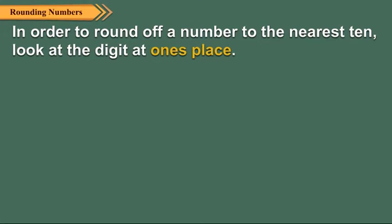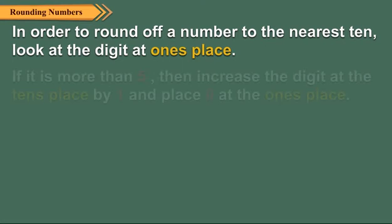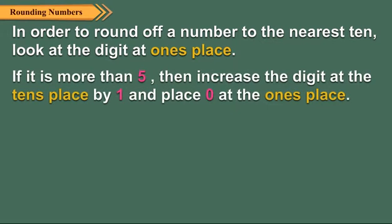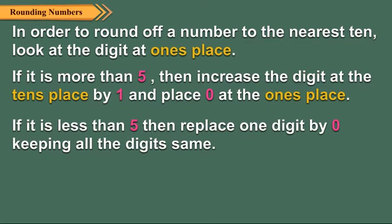In order to round off a number to the nearest ten, look at the digit at the one's place. If it is more than five, then increase the digit at the tens place by one and place zero at the one's place. If it is less than five, then replace the one's digit by zero, keeping all the other digits the same.